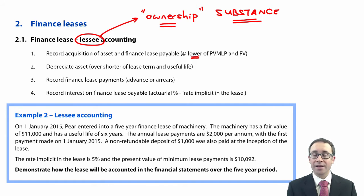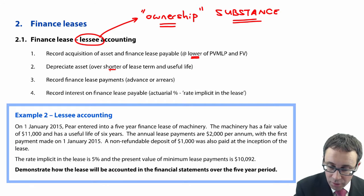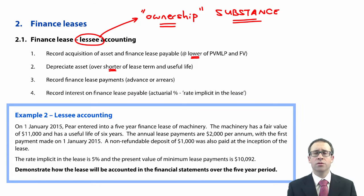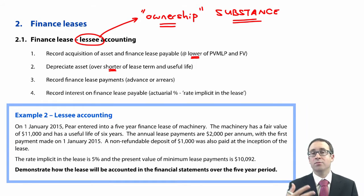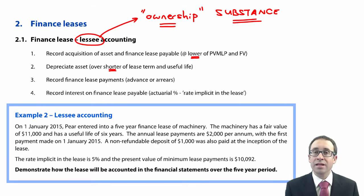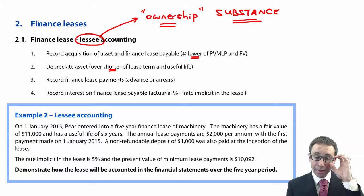You then depreciate that asset over the shorter of the lease term and the useful life, because it's over the shorter of those two that we get the benefit. If the lease term is shorter, that's whereby we get the benefit; if the useful life is shorter, that's whereby we get the benefit. It's usually that the lease term is shorter than the useful life, or they're very similar anyway.